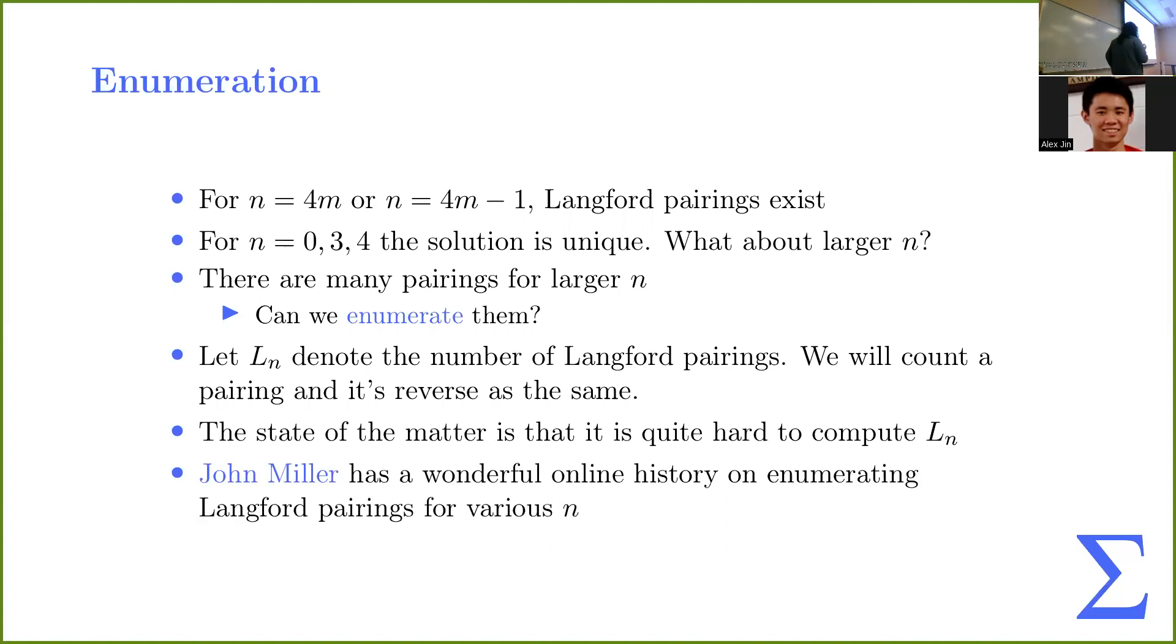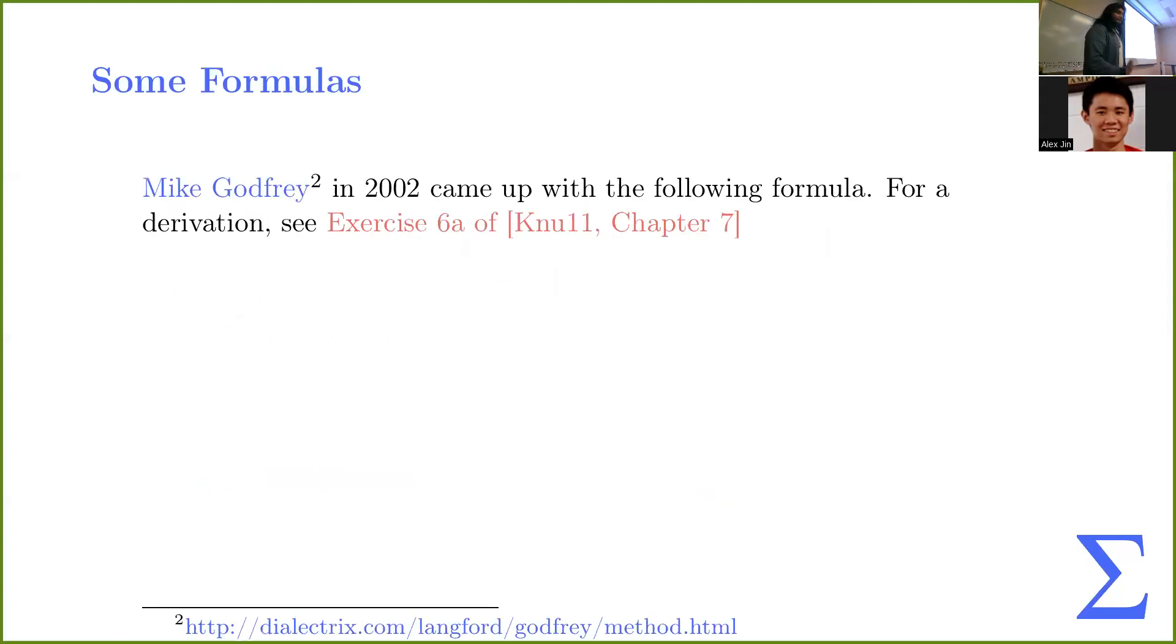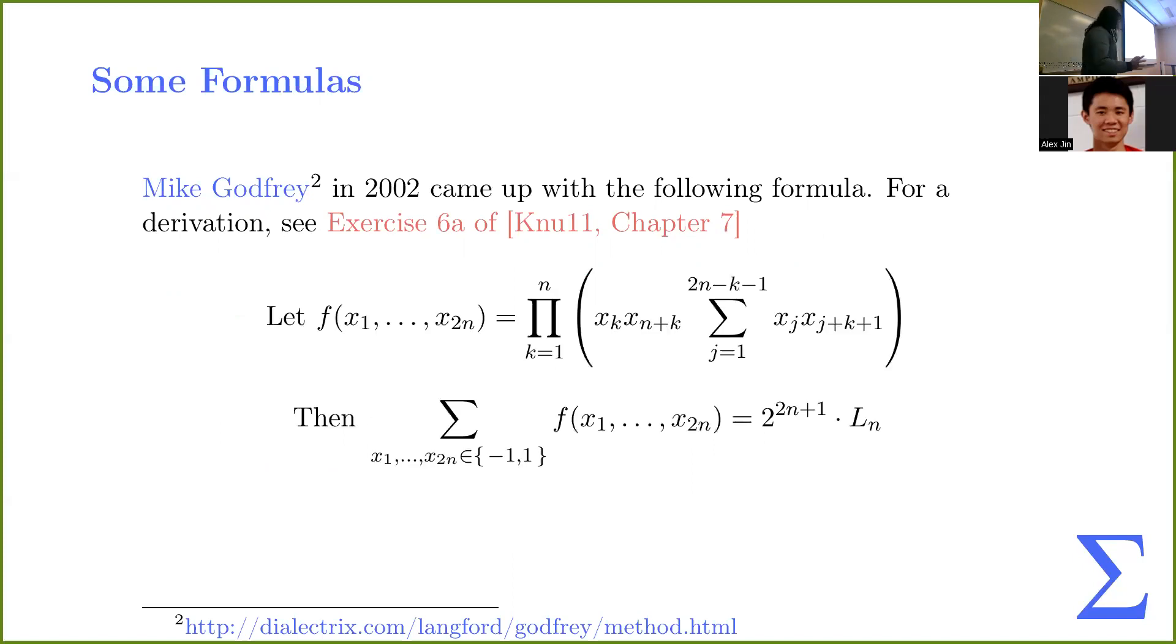So, let L of N denote the number of Langford pairings. And we're going to count a pairing and its reverse as the same. And the state of the matter in research is that it's quite hard to compute this value. So, online, John Miller has a really nice history online about, like, people trying to enumerate Langford pairings for various n. You know, because the numbers grow quite large. People have done lots of compute power. And there's a lot of interesting work about doing math to optimize formulas and optimize algorithms for computing L of N. And so, in 2002, Mike Godfrey came up with a formula. And if you want to see the formula in action, it's written out in Art of Computer Programming, Volume 4A, Exercise 6A of Chapter 7. But here it is.